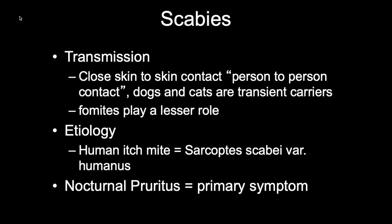The second skin infestation is scabies, also called kurikong in our local dialect. This is also very contagious. The causative agent is a human itch mite called Sarcoptes scabiei var. hominis. Transmission is from person to person through close skin-to-skin contact. Animals may also harbor the mite, but they are considered transient carriers, meaning the mite is species-specific and only affects humans.